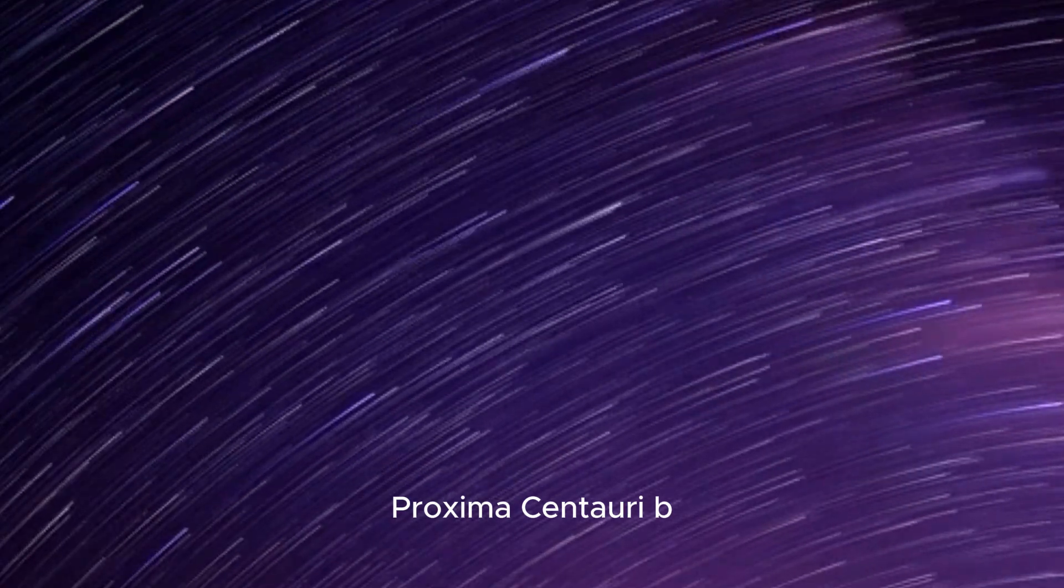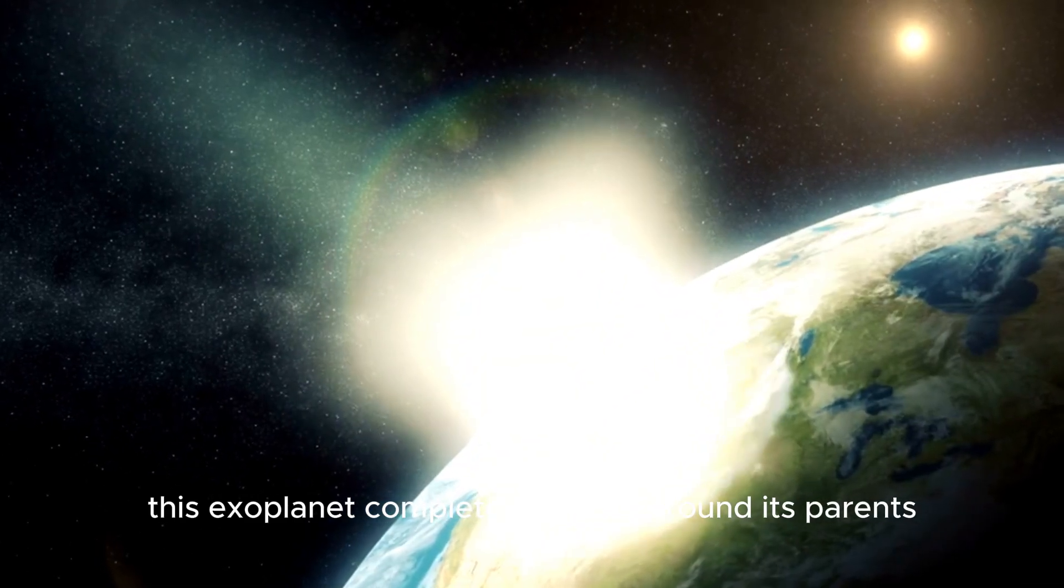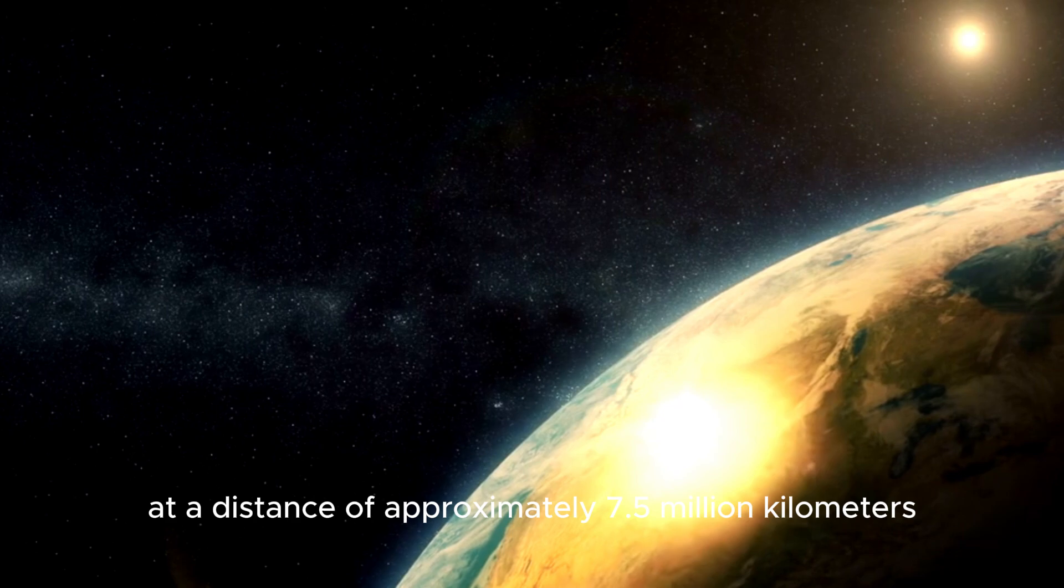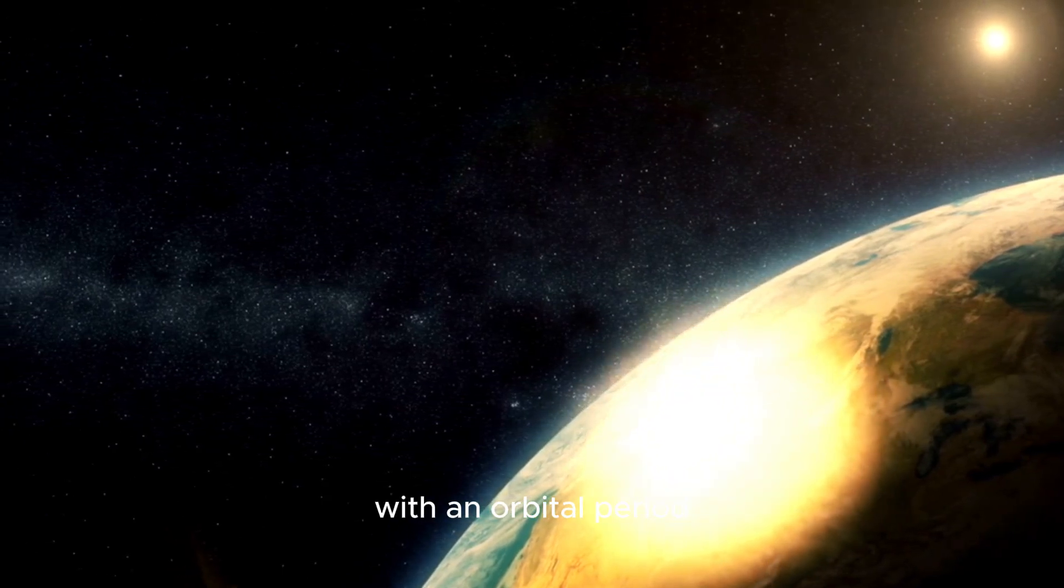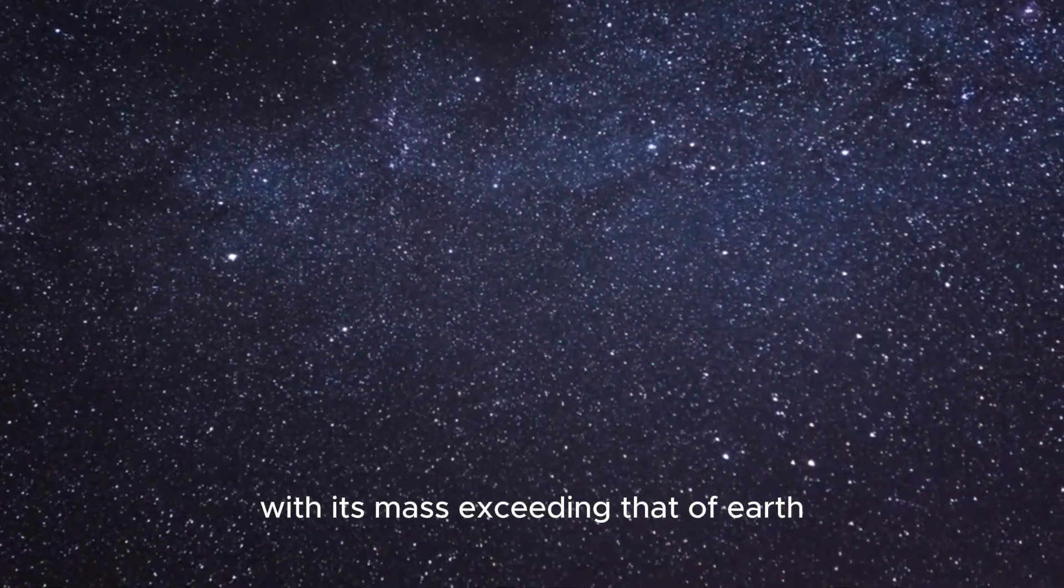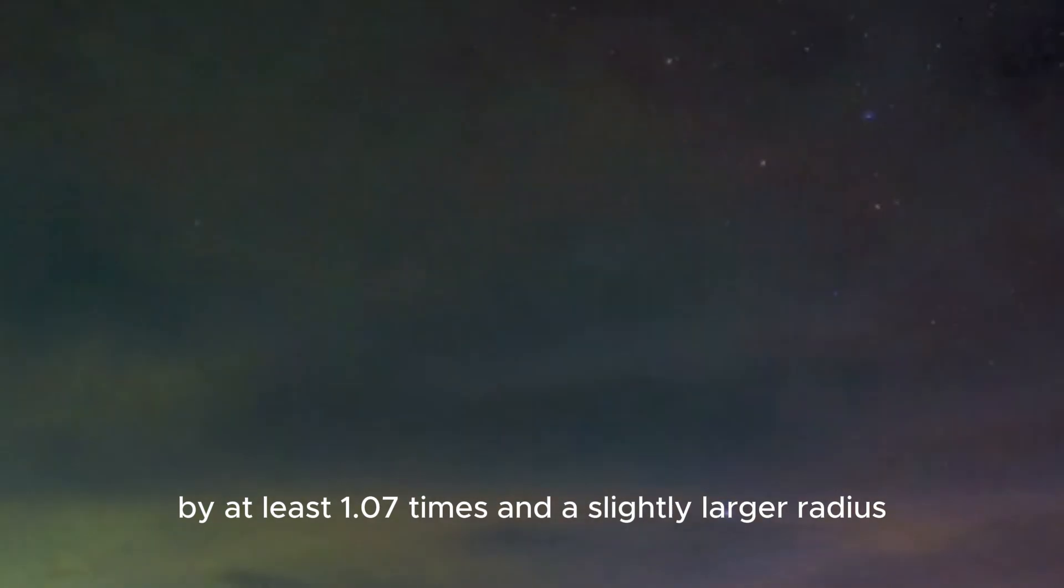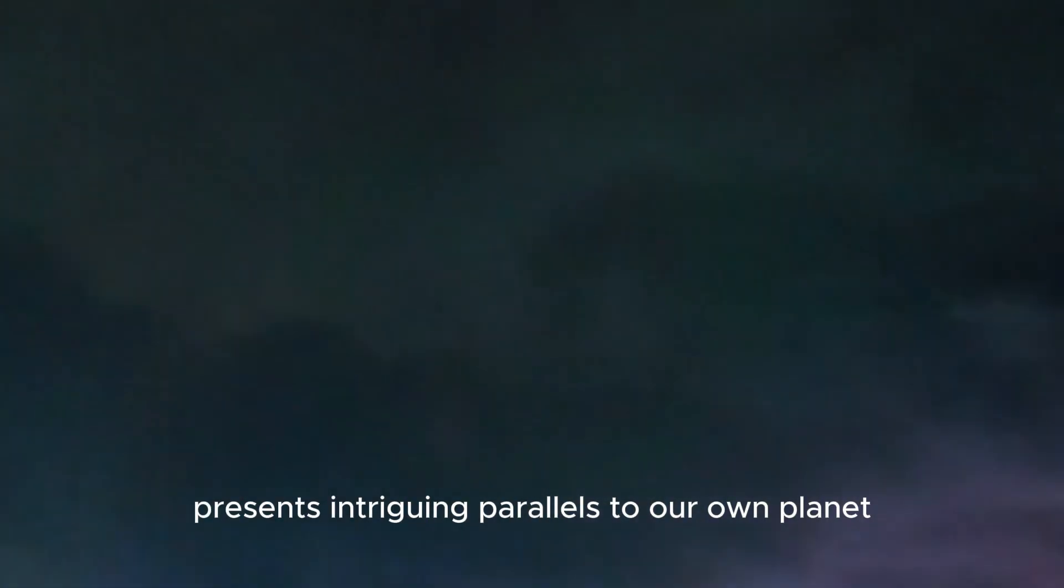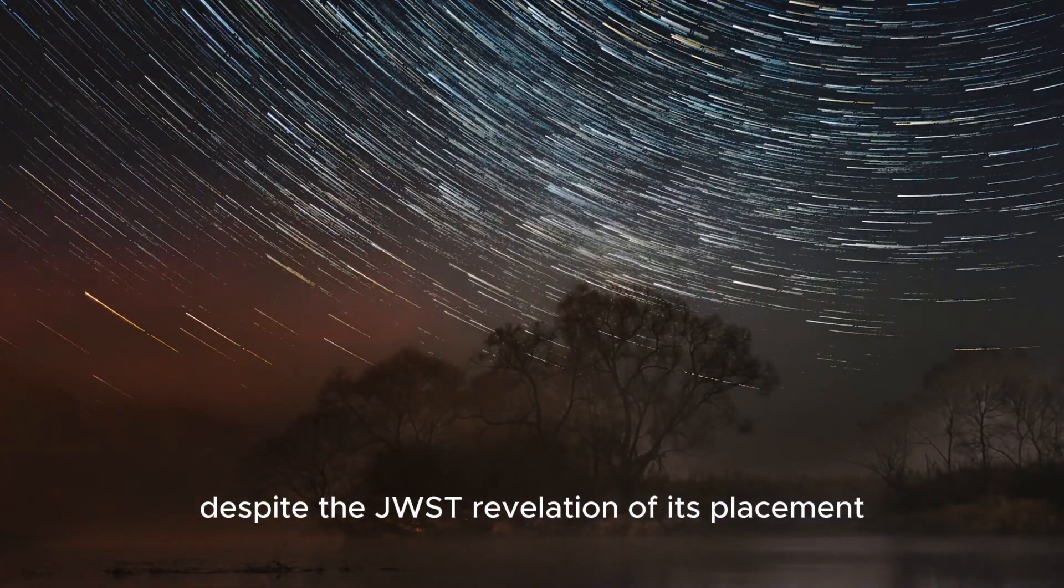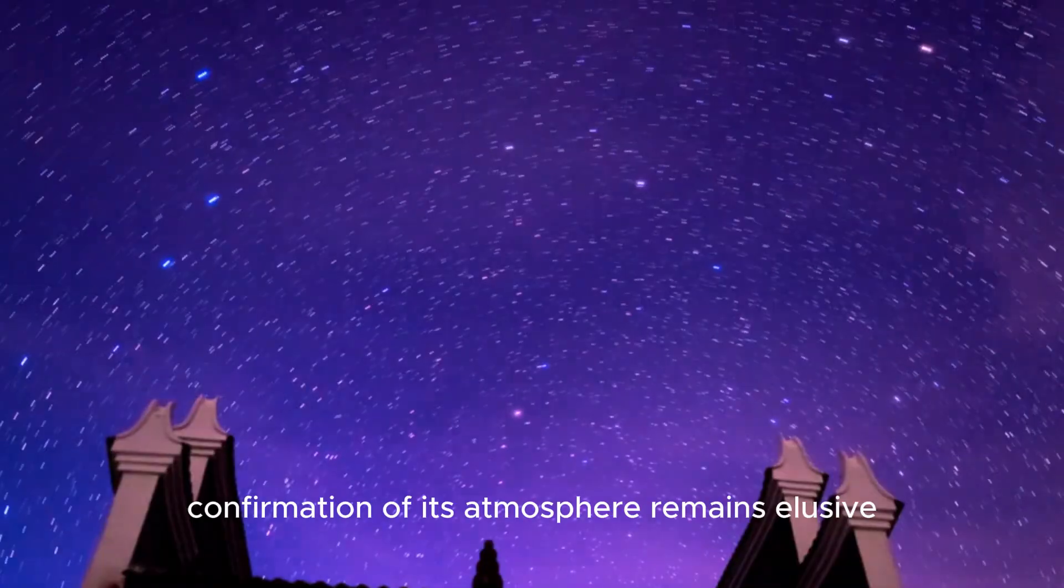Proxima Centauri B has garnered attention as a potential Earth-like world. This exoplanet completes its orbit around its parent star at a distance of approximately 7.5 million kilometers, with an orbital period spanning roughly 11.2 Earth days. With its mass exceeding that of Earth by at least 1.07 times and a slightly larger radius, Proxima Centauri B presents intriguing parallels to our own planet. Despite the JWST revelation of its placement within the habitable zone, confirmation of its atmosphere remains elusive.